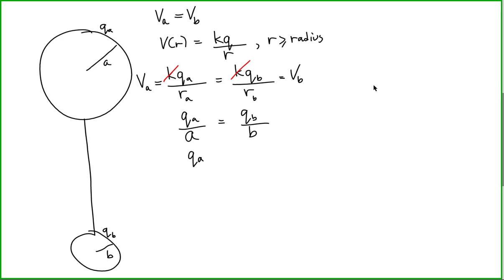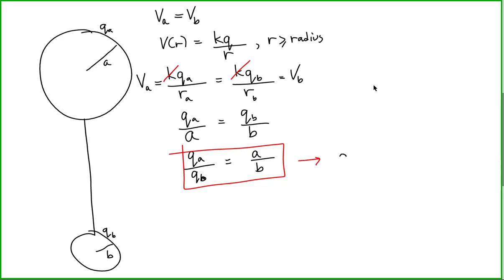Therefore, the ratio of the charge on sphere A to the charge on sphere B is equal to the ratio of their radii: QA/QB = A/B. This means the charge on sphere A equals the ratio of the radii times the charge on sphere B. Since sphere A is larger than sphere B, the charge on sphere A is bigger than the charge on sphere B. Conversely, if sphere A had a smaller radius, its charge would be smaller. So the ratio of charges in electrostatic equilibrium equals the ratio of their radii.